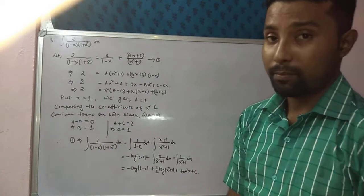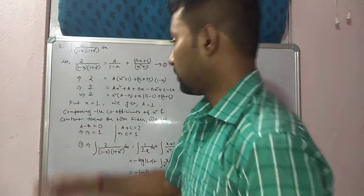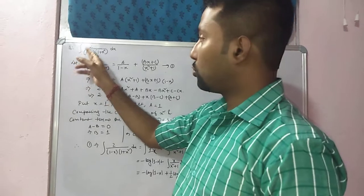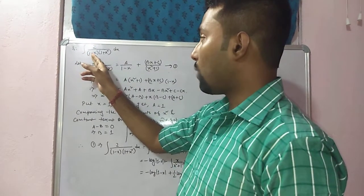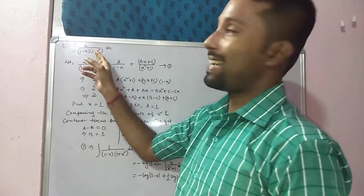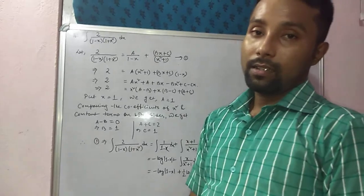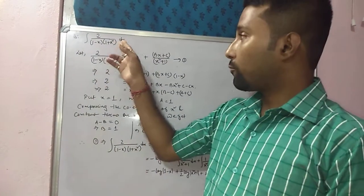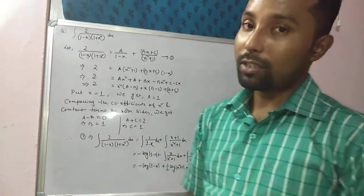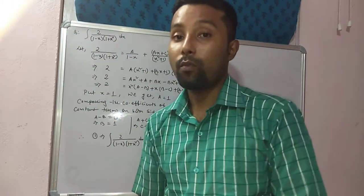Take the second example: integration of 2 by (1 minus x) into (1 plus x square) dx. From this integrand, clearly we can say that this is not improper — this is in proper form.